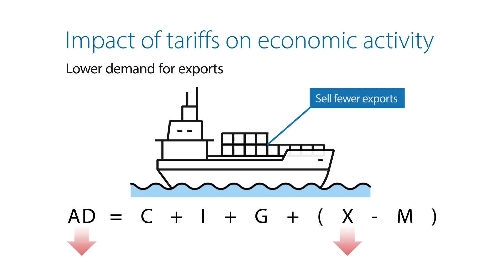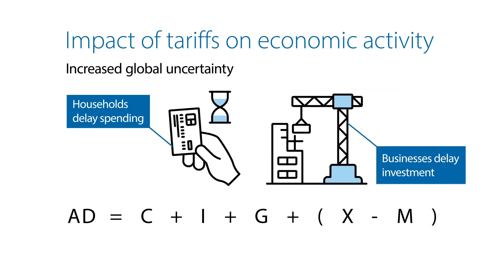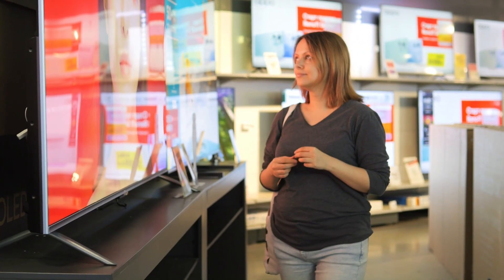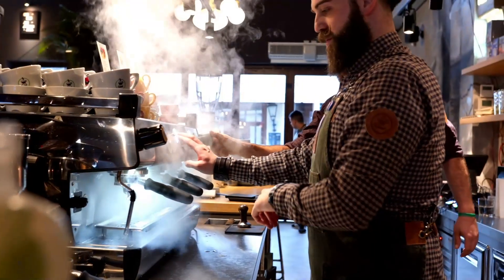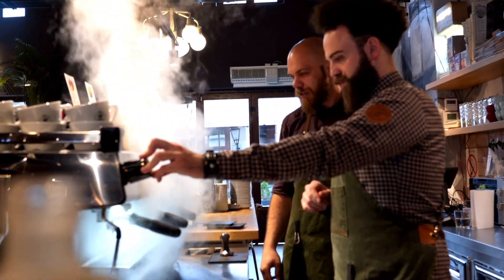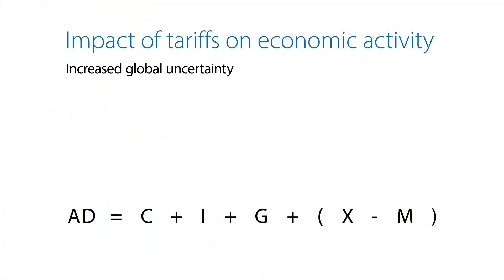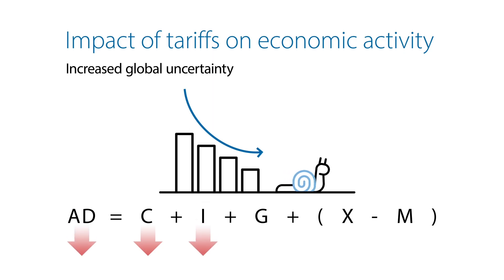Second, trade tensions create significant uncertainty. When households and businesses aren't sure what's going to happen, they might play it safe and decide to save instead of spending. For example, your family might delay buying a new TV or going on a holiday. Or suppose you're a coffee shop owner who wants to buy a new coffee machine — but since the economic environment is uncertain, you might decide to wait. When these decisions are all added up, it could lead to slower growth in consumption and investment, which would also slow economic activity.